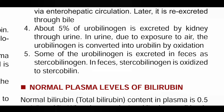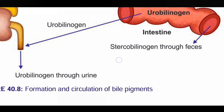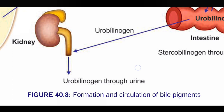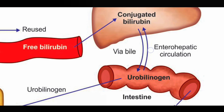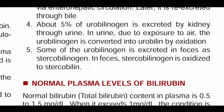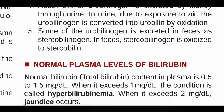About 5% of urobilinogen is excreted by the kidney through urine. In urine, upon exposure to air, urobilinogen is converted into urobilin by oxidation. Some of the urobilinogen is excreted in the feces as stercobilinogen, which is oxidized to stercobilin.